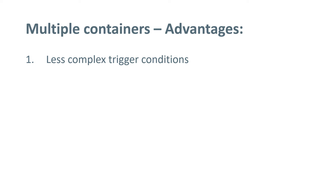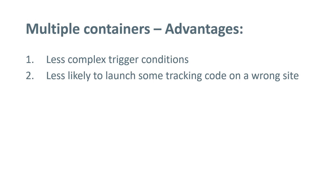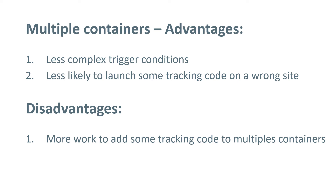And if you create a new tag for one website, the risk of accidentally firing it on another website will be much smaller — actually, it will be zero, because you won't have the same container on multiple websites. However, there is a significant disadvantage to keep in mind: if you have 50 websites with 50 containers and you want to add a tag to all of them, you will have to do that 50 times. If you had one GTM container for all 50 websites, it would be enough to add the tag only once.